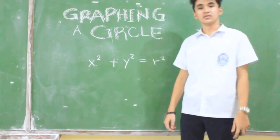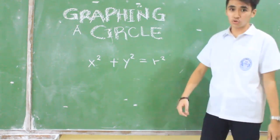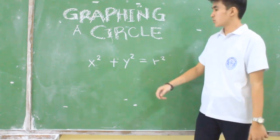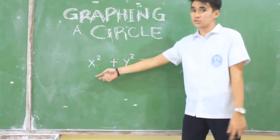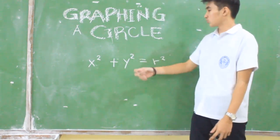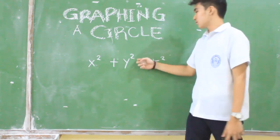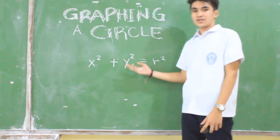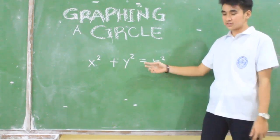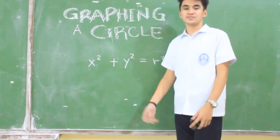So, what is a circle? A circle is made up of two curves, which has not only the x squared but also the y squared, like this equation. This equation is the standard form of a circle.